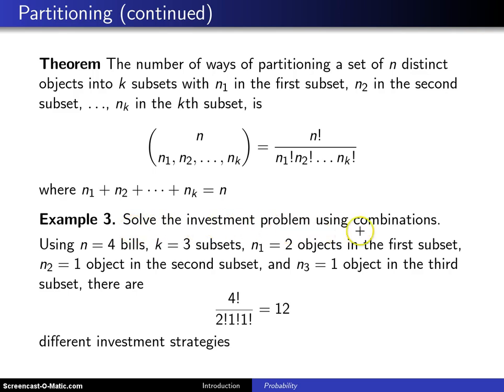We want to solve the investment problem using combinations, specifically using the partitioning theorem. In this case we have n = 4 bills that we're going to partition, and there are k = 3 subsets.